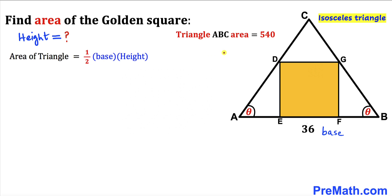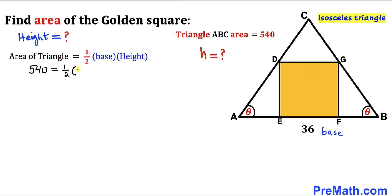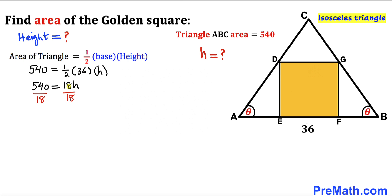Let me call the height of triangle ABC as lowercase h. Filling in the formula: 540 equals one-half times 36 times h. Simplifying the right-hand side and dividing both sides by 18 to isolate h, we get h equals 30 units.